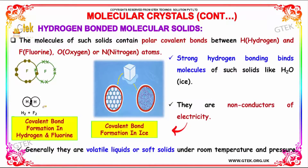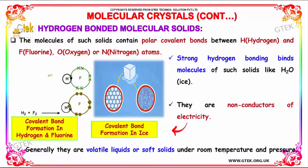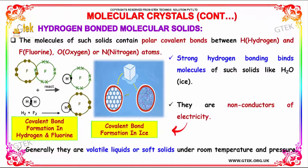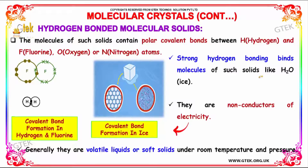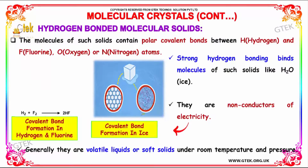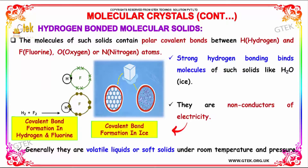Hydrogen bonded molecular solids: the molecules of such solids contain polar covalent bonds between hydrogen and fluorine, oxygen, and nitrogen atoms. Strong hydrogen bonding binds molecules of such liquids or solids, like H2O — you are able to see ice here. They are non-conductors of electricity. Generally, they are volatile liquids or soft solids under room temperature and pressure.